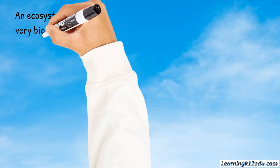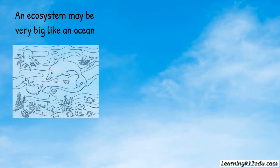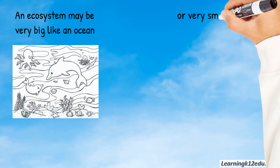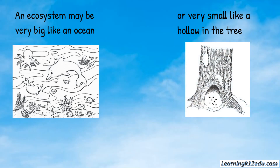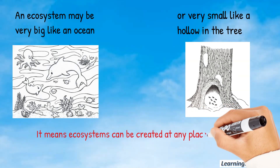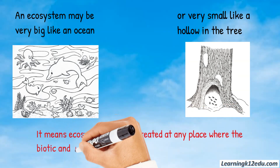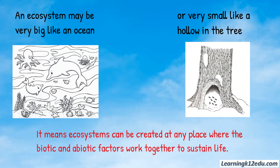An ecosystem may be very big, like an ocean, or very small, like a hollow in the tree. This means ecosystems can be created at any place where the biotic and abiotic factors work together to sustain life.